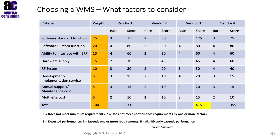And then we have our four vendors. Each vendor is given a rate. For example, vendor one's software as a standard function — we've given them a score of three. Three times 25, which is the weighting, gives us a total score of 75. And we do that for each of the criteria and each of the vendors. Once we've completed the table, we look at the total score and we can see here that vendor three is by far the most suitable vendor to choose. And therefore, we would go with that particular company to supply the warehouse management system.